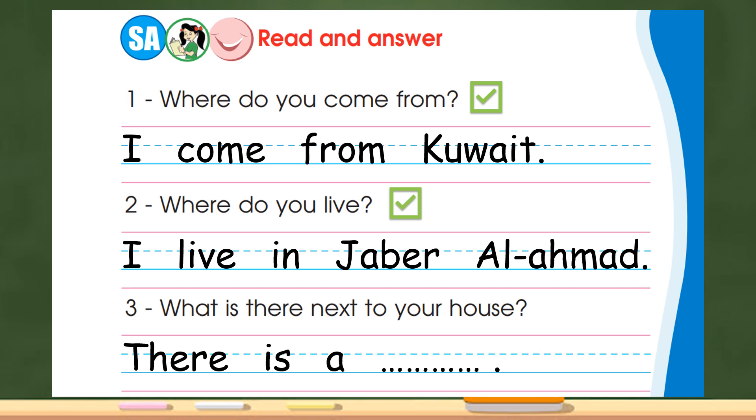Number three: what is there next to your house? There is a, and you can write anything: there is a park, there is a bookshop, there is a supermarket, there is a bakery, whatever you want to write.